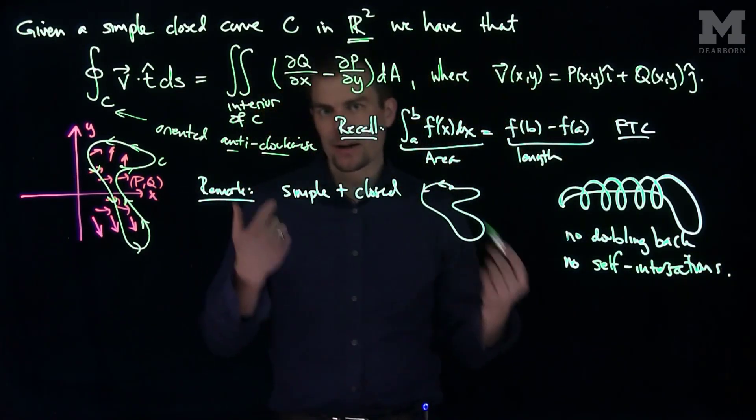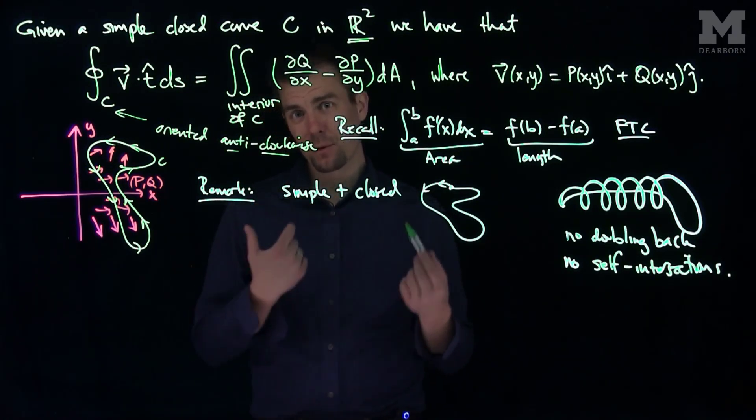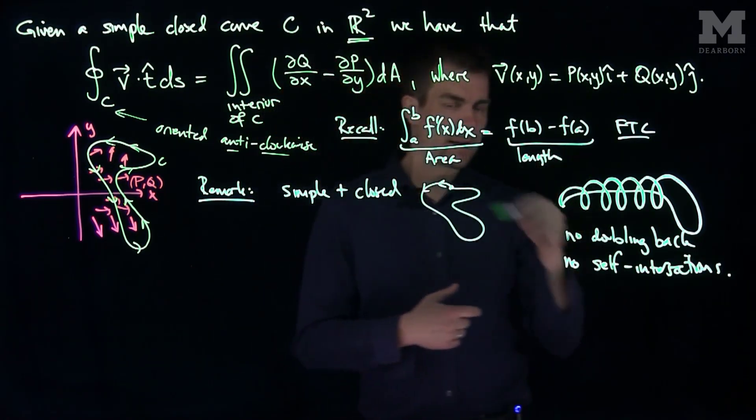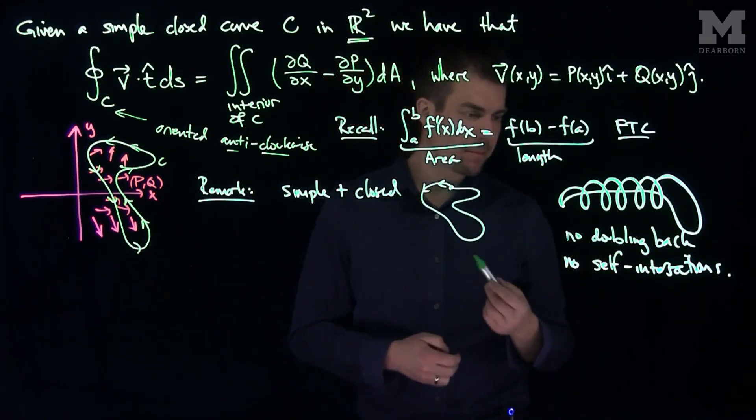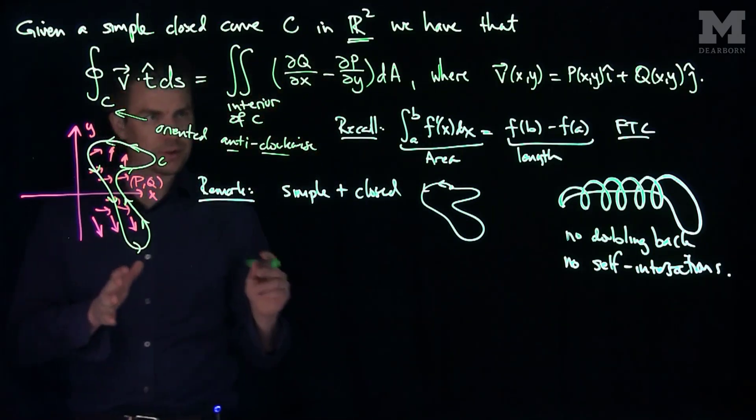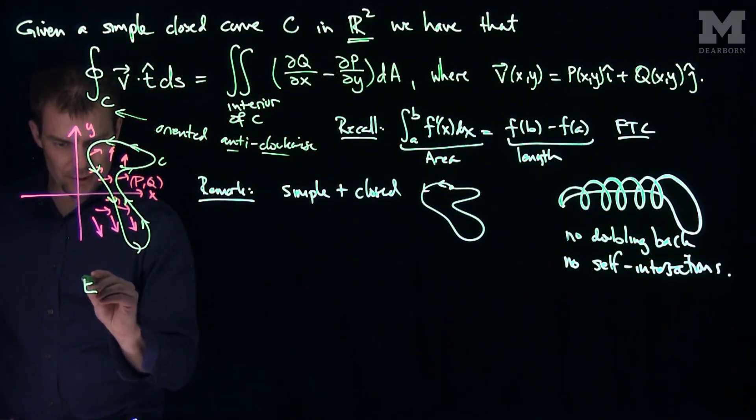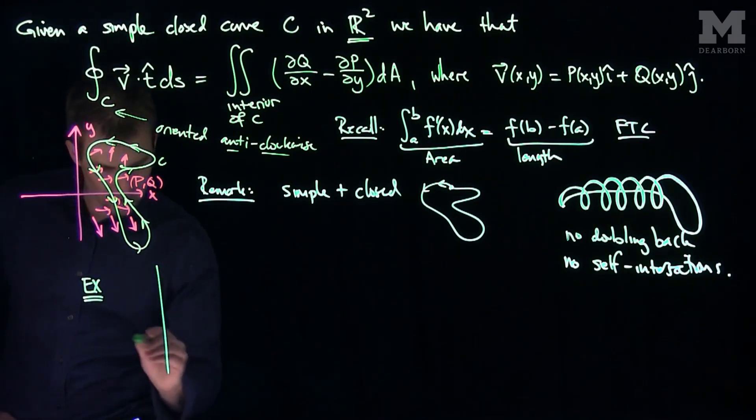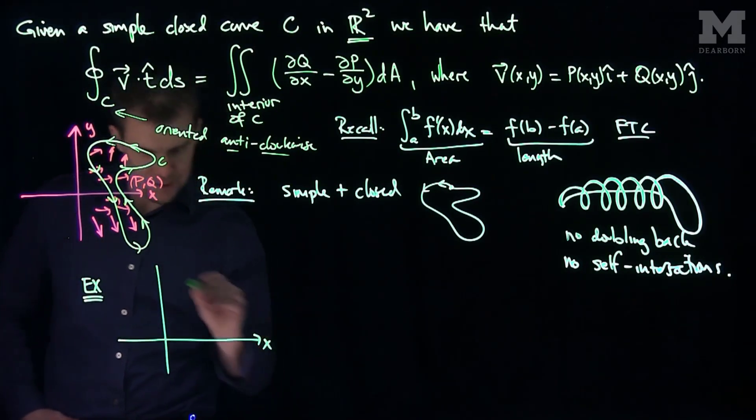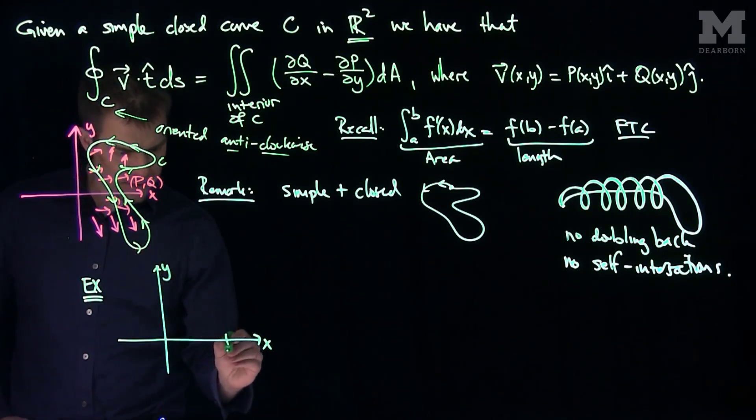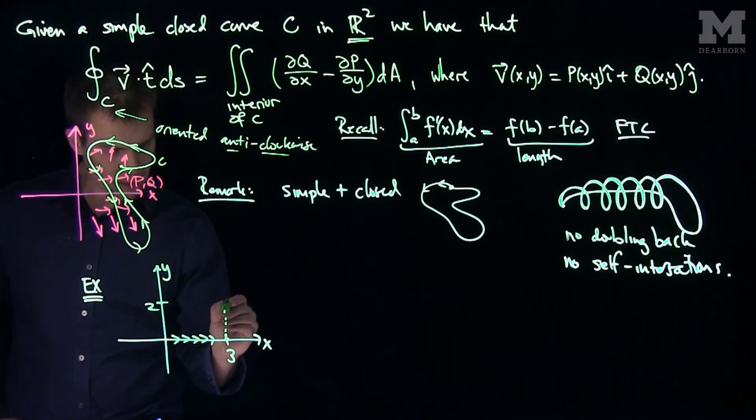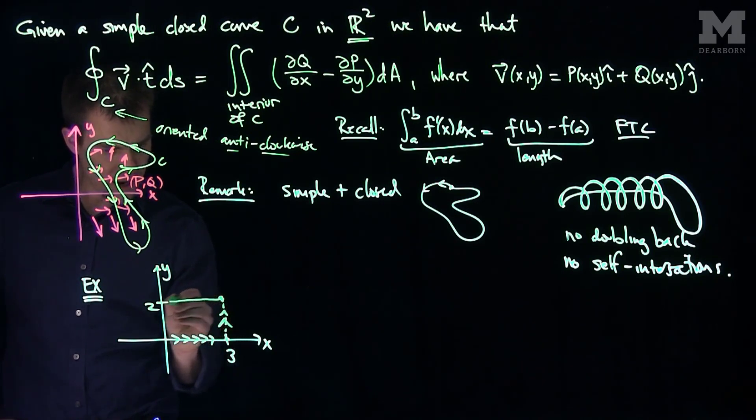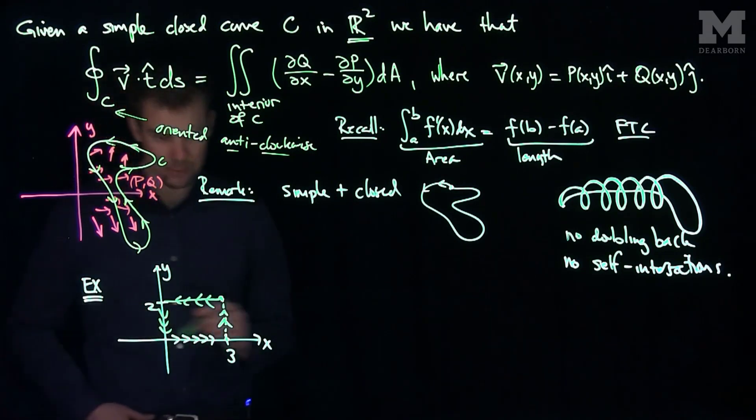So for example, a rectangle or a circle or a triangle are all examples of simple closed curves, whereas something like an infinity symbol or a more complex polar curve would not be a simple closed curve. Now to illustrate how this is useful, let's look at one particular example. So here's the x-axis and here's the y-axis. If our curve C went from (0,0) to (0,3), then up to (3,2), then back over to (0,2), then back down to (0,0).